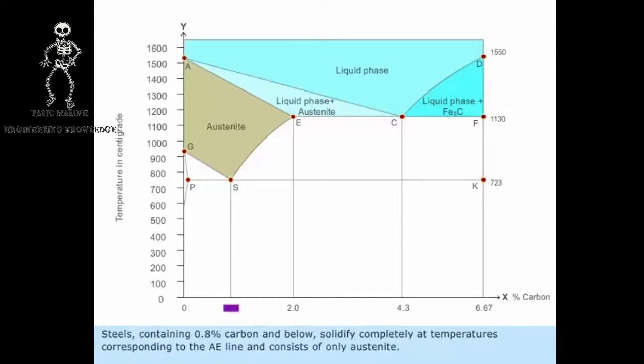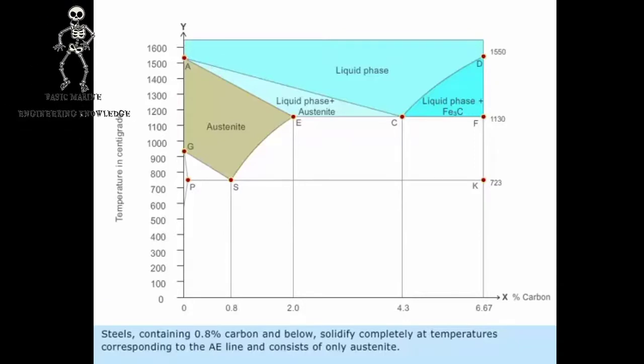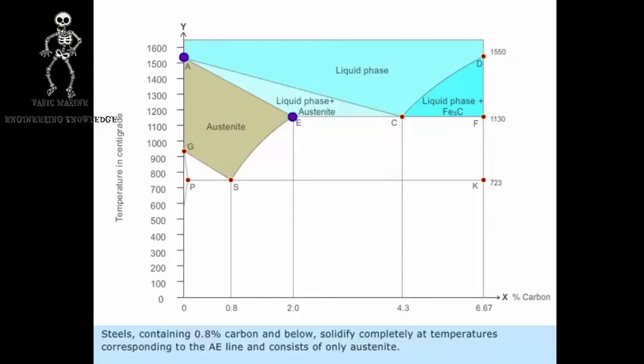Steels containing 0.8 percentage carbon and below solidify completely at temperatures corresponding to the AE line and consists of only austenite.